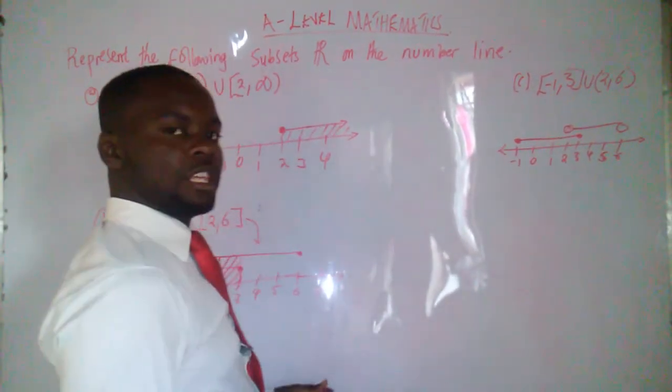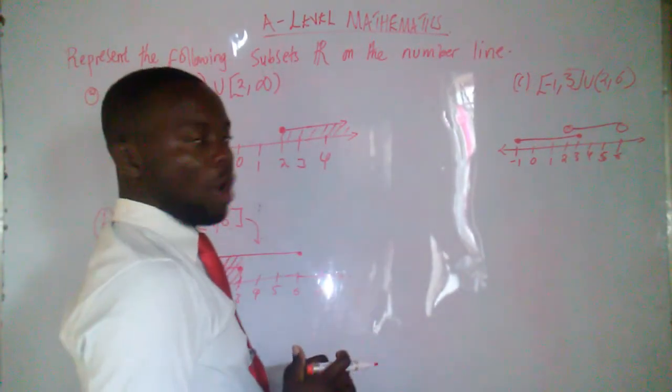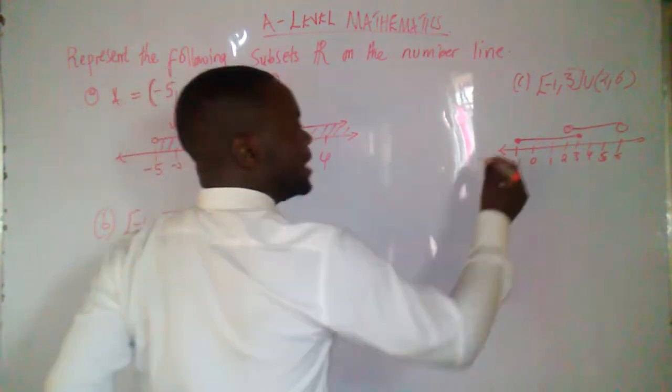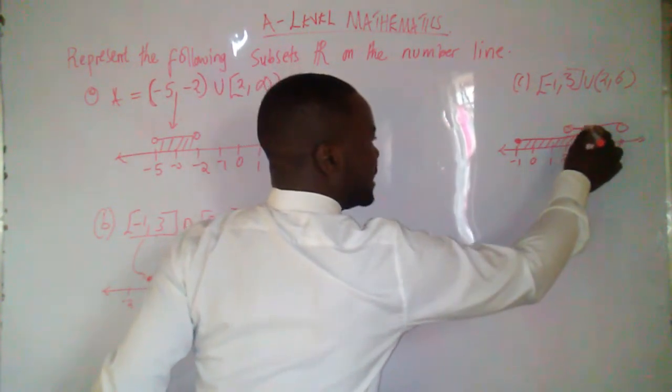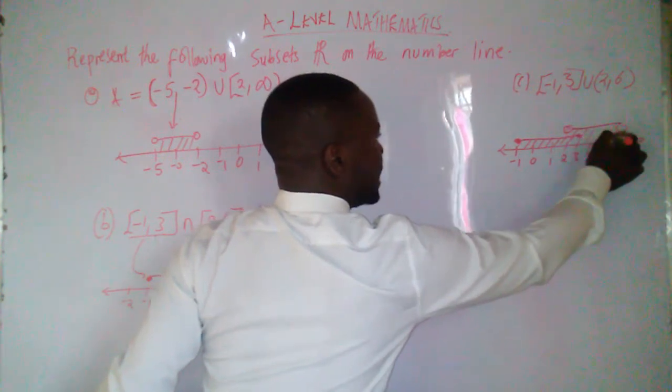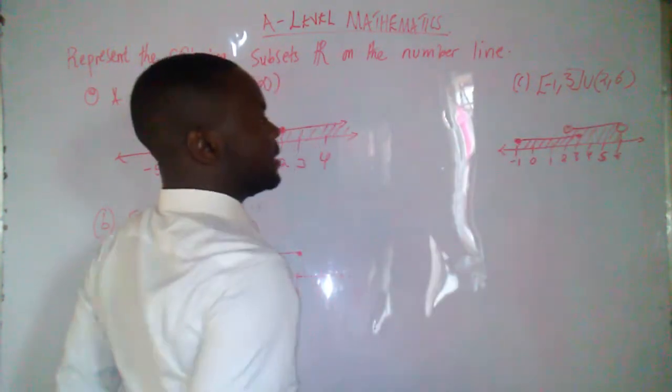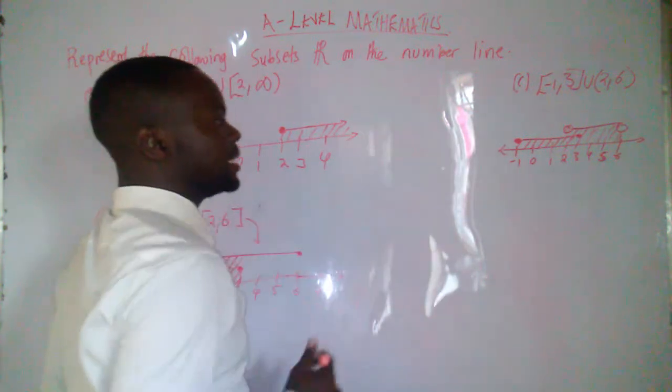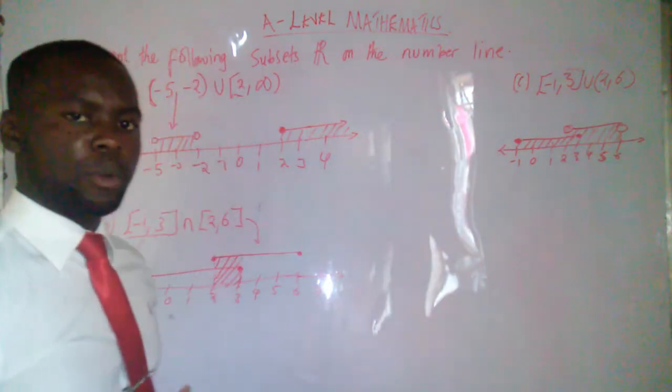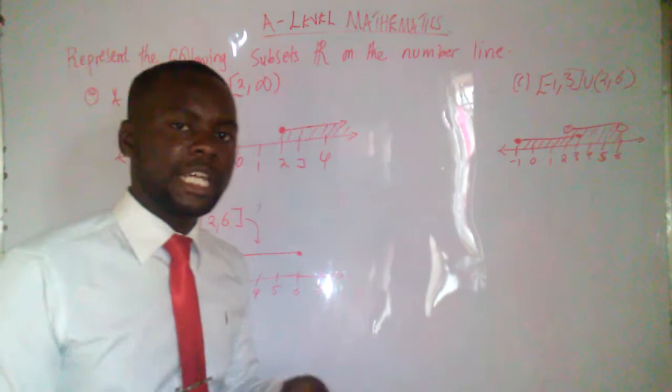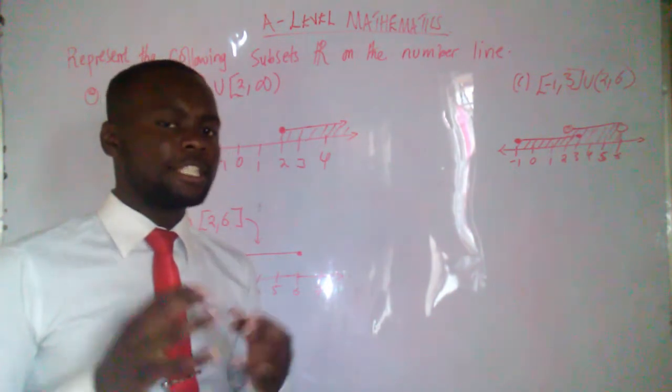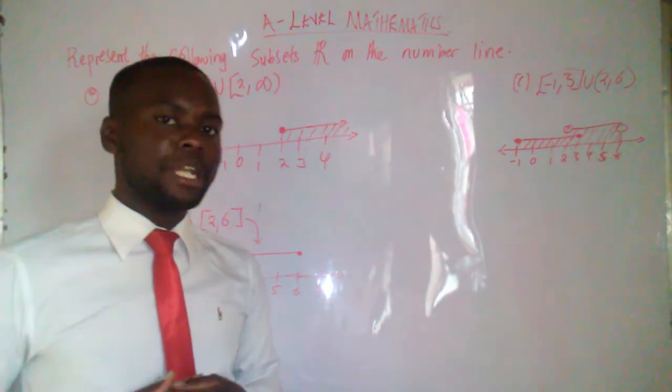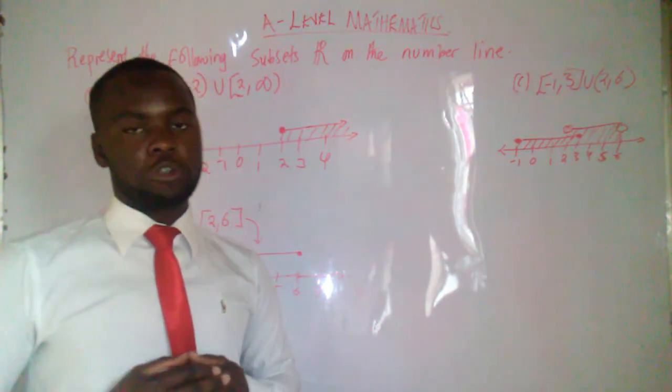So since it's a union, then we are going to combine everything. How can we combine everything? By just shading the region under the lines. So that is our answer. Very simple way of how to represent a set on a number line. And I hope you have followed me step by step as I was explaining. Thank you for watching this video.